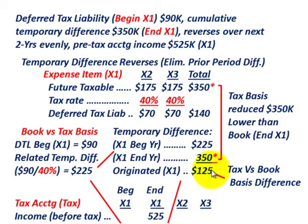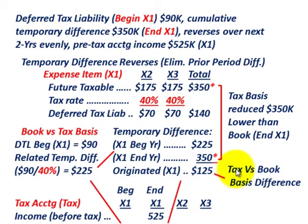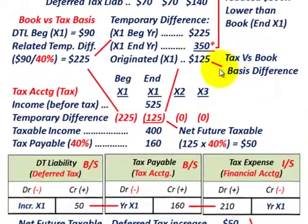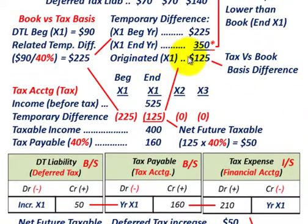That $125,000 is where the tax versus book basis differs. This is what would have been deducted from the tax basis in year x1, but not for book basis — that deduction comes later. The tax basis is reduced by $350,000 in year x1, so our tax basis is lower than our book basis at the end of year x1 by $350,000. So the originated amount in year x1 is $125,000, the temporary difference for that year.